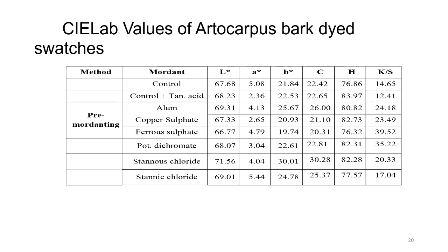For the CIE Lab values of Artocarpus bark dyed swatches: control shows L value of 67.68, ferrous sulphate gives 66.7, with others showing slightly equal or lesser values. The K/S value of the control is 14.65, rising to 24.18 with alum and 39.52 with ferrous sulphate. Therefore, alum, ferrous sulphate, and potassium dichromate are very good mordants for Artocarpus bark dyed swatches.